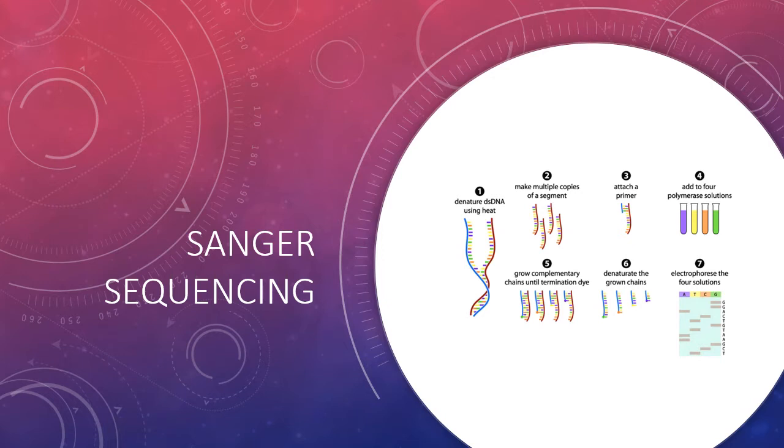And four polymerase solutions are added, and as you can see, they are the multicolored dyes, and then those complementary chains are allowed to grow until termination occurs, and then those chains are denatured, and then you run the four solutions through electrophoresis.